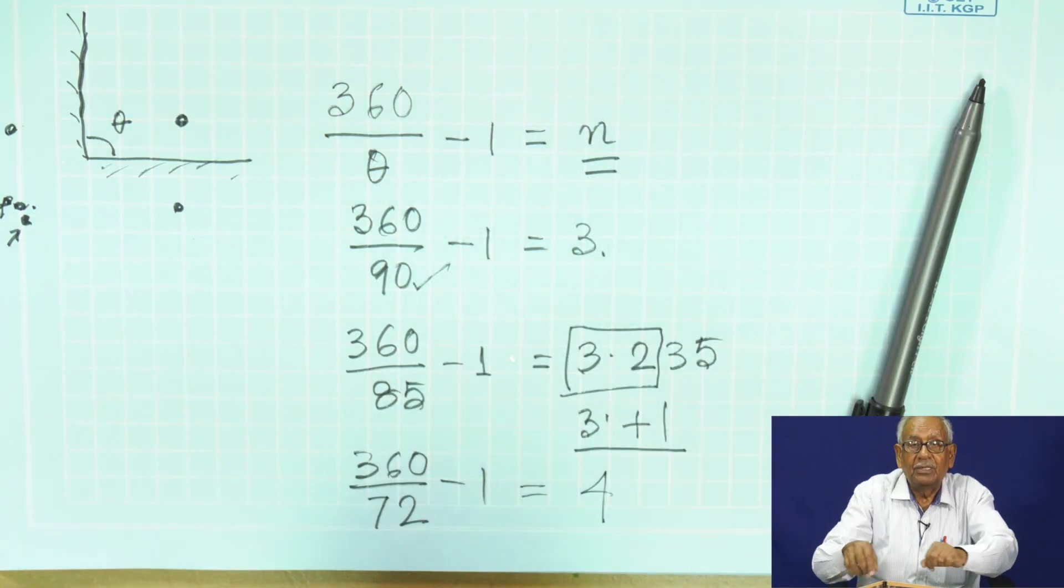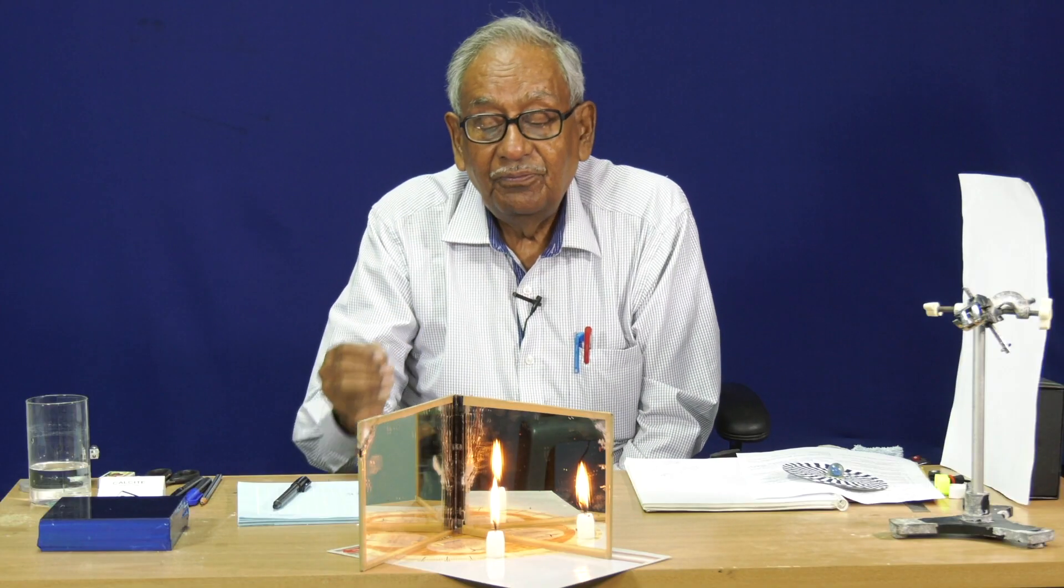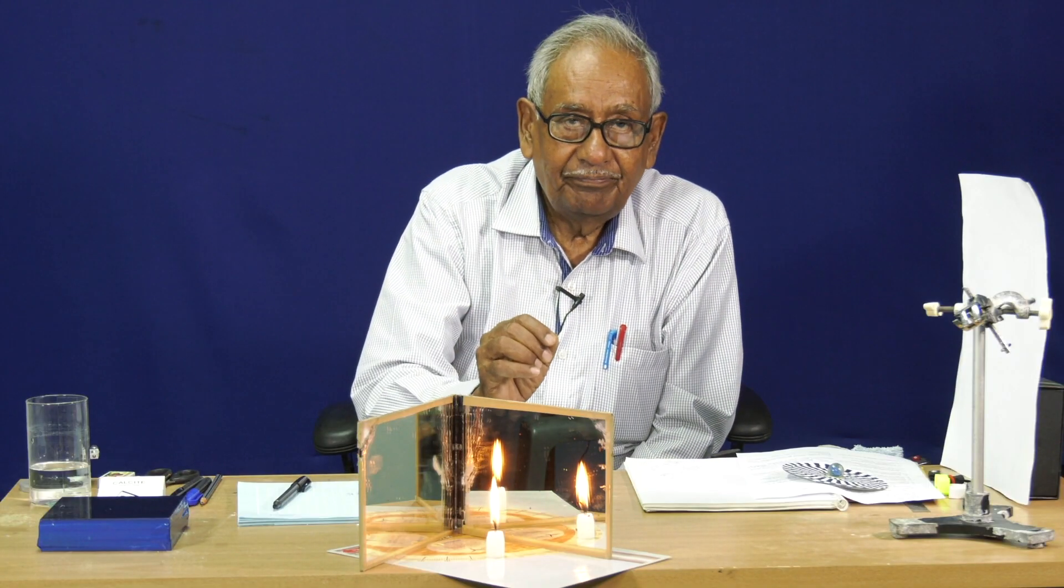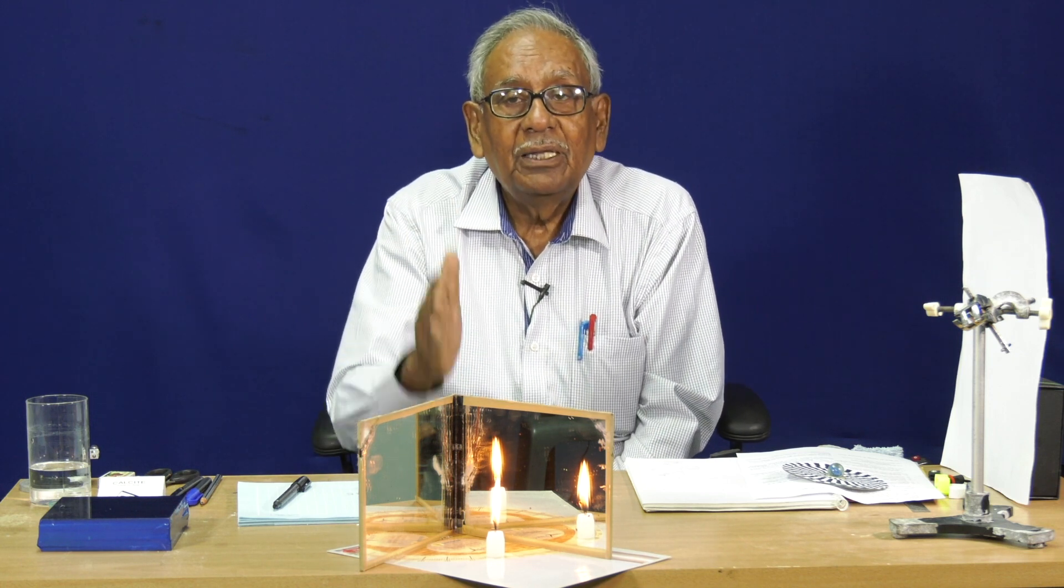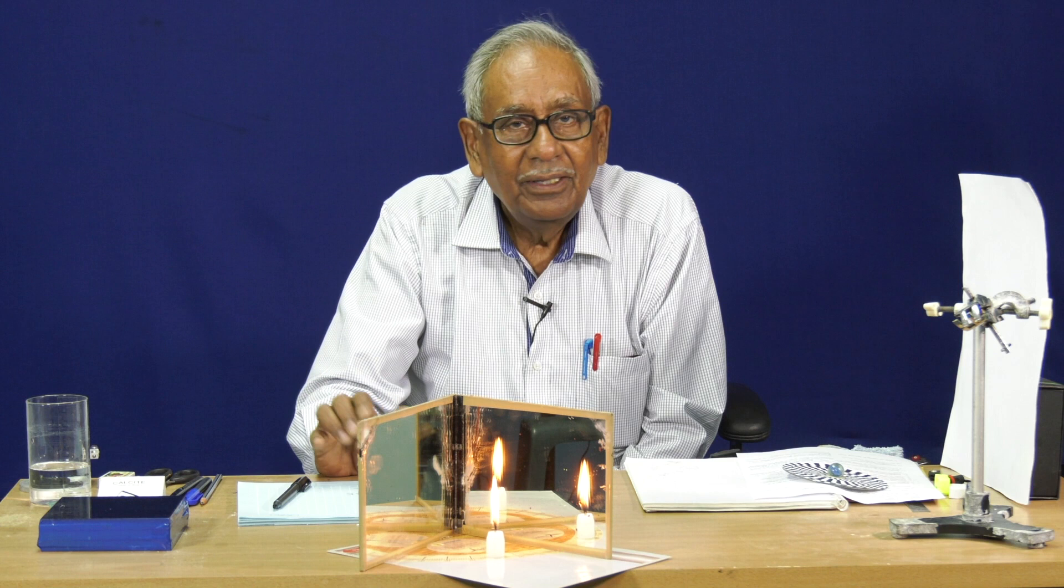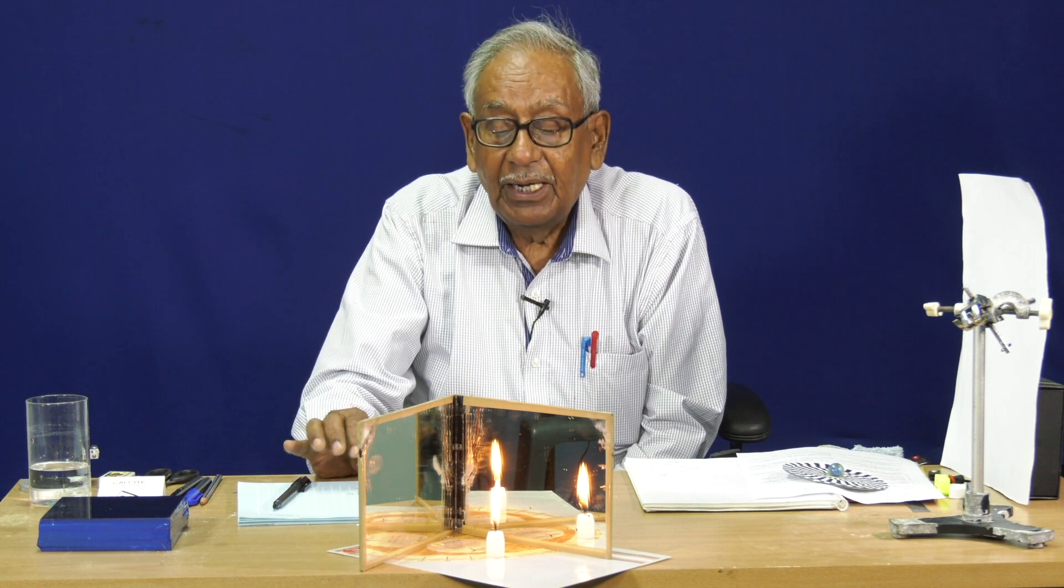This is a very interesting experiment. You do not see a fractional image, but you see the whole image. In the book it is written if there is a fraction, add 1. But actually, how can you make a fraction of an image? That is not possible.